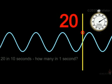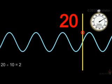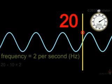I can then ask, if 20 passed me in 10 seconds, how many would pass me in one second? The answer is 20 divided by 10, so 2. I can say the frequency of peaks passing me is 2 per second.